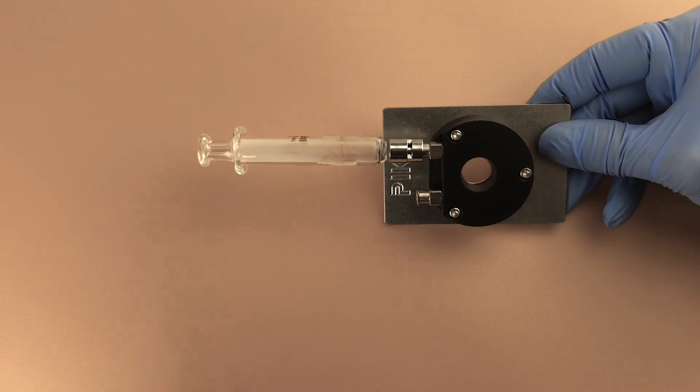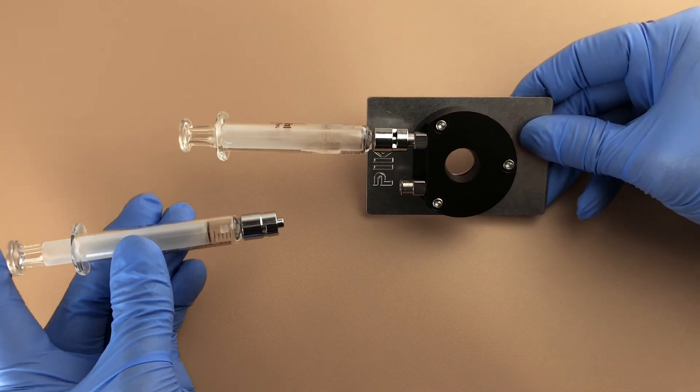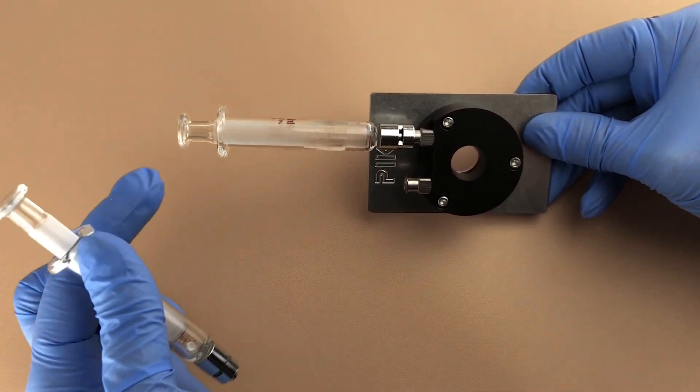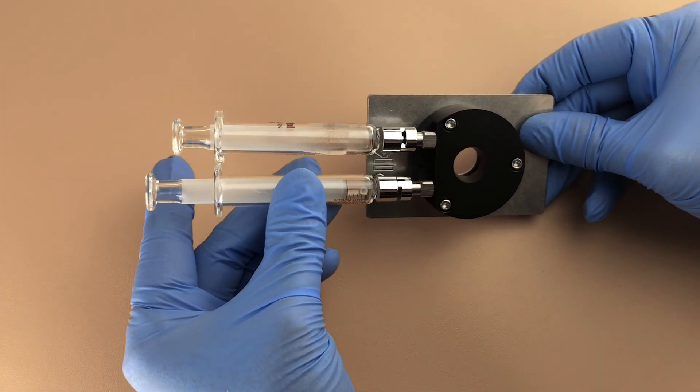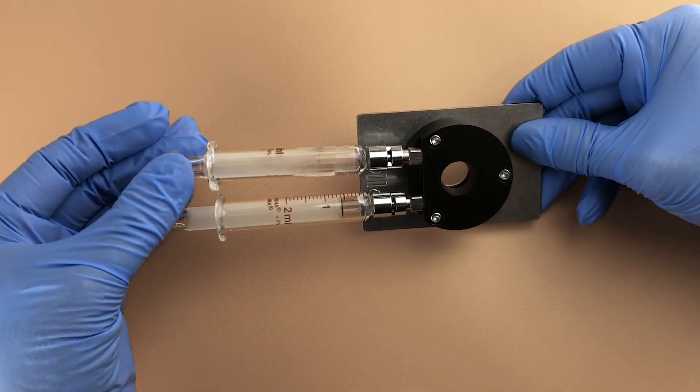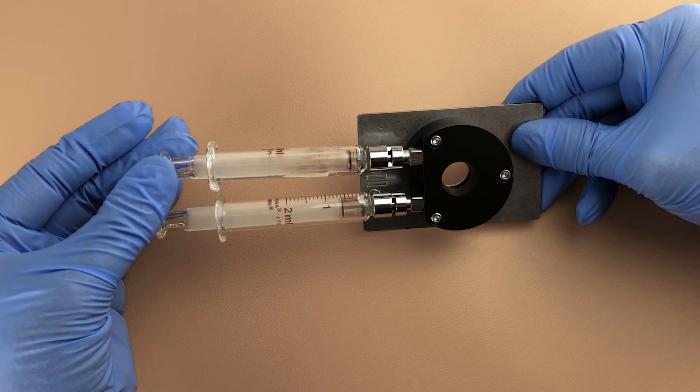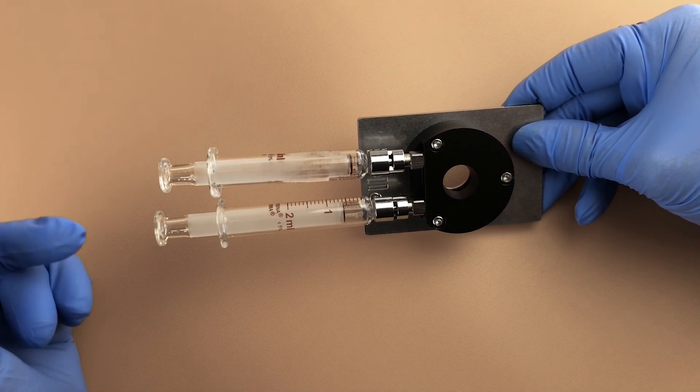When I'm filling a liquid transmission cell, I'll use two 2 millimeter syringes. One will be empty and the other will contain the sample. To fill the cell, simply pull on the empty syringe and this will create a pressure differential that will pull your sample through the cell.